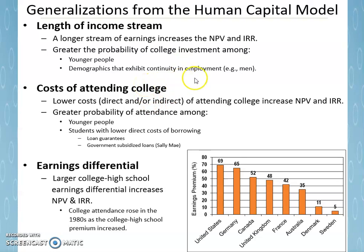Another factor is demographics that exhibit continuity in employment. Traditionally this was men, but it doesn't have to be. Continuity means staying in the workforce regularly. Historically, women did not have as much continuity as men because of childbirth, which would bring women out of the workforce multiple times depending on the number of children. Today, with women having fewer children, the difference in continuity between men and women is becoming less. But obviously, more continuity means more earning years and higher net present value and internal rate of return.